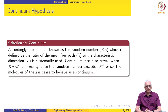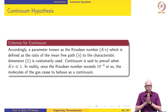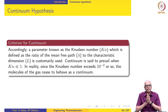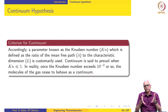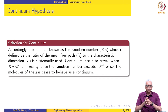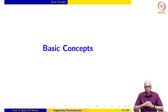So what we assume when we do macroscopic thermodynamics is that property values at any instant are known without any ambiguity, and the property values are the same everywhere in the system regardless of where we measure them. This brings us to the close of the first module.